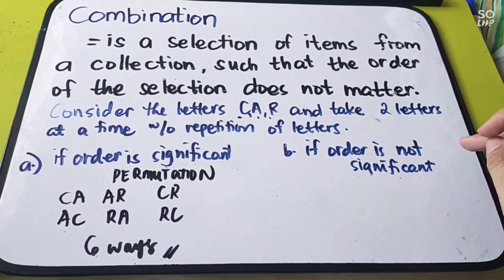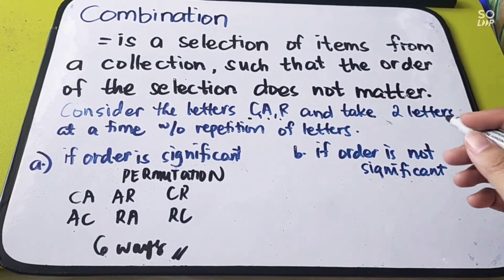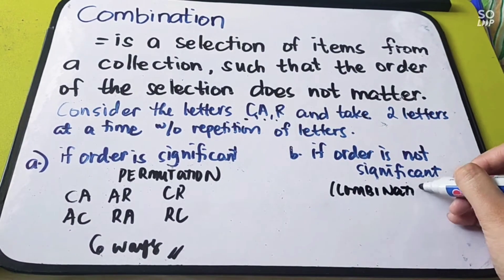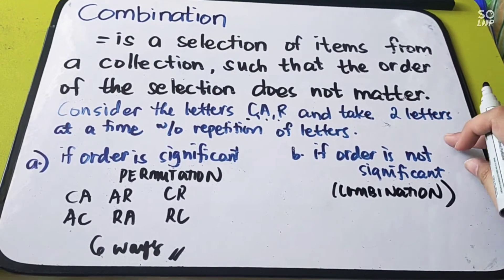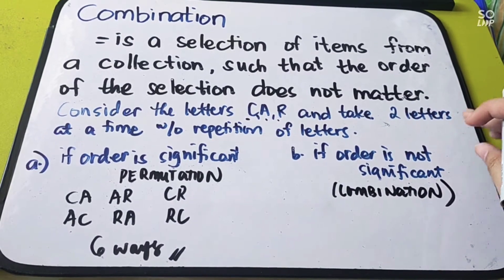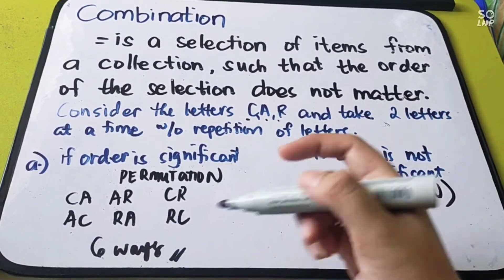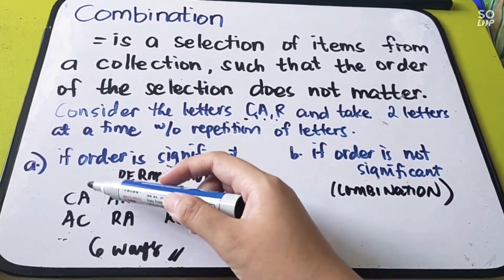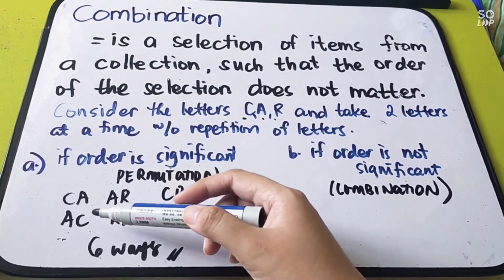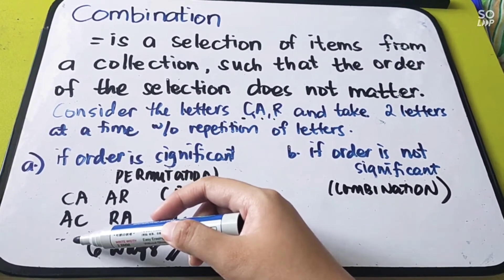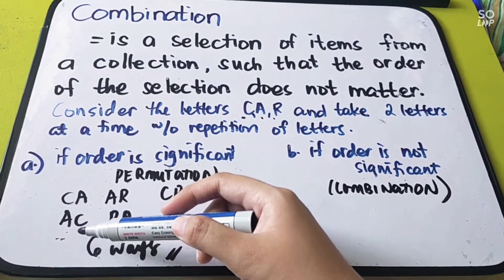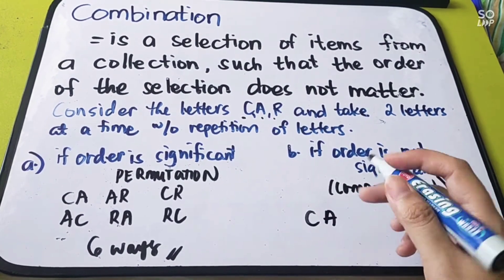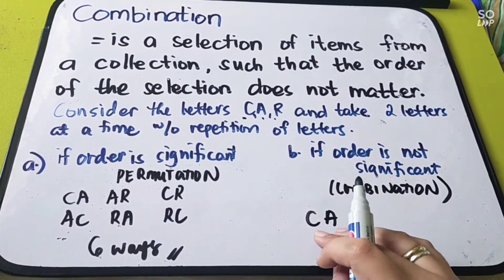What if the order is not significant? This is what we call combination. When order is not significant, you no longer need to repeat the objects in your arrangements. For example, we have C-A and A-C. These are two arrangements, but is there any difference? None — the only difference is their position. So one of them no longer needs to exist; we only count C-A once.